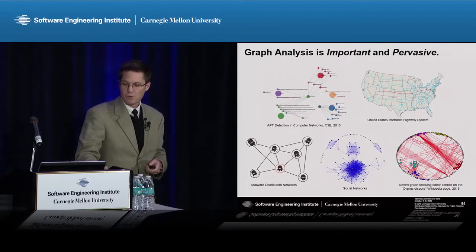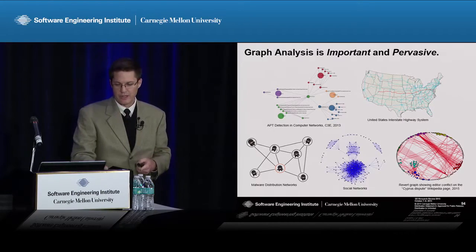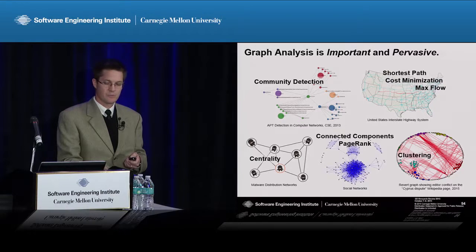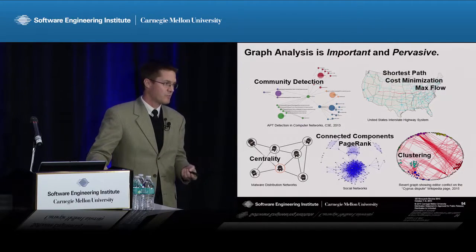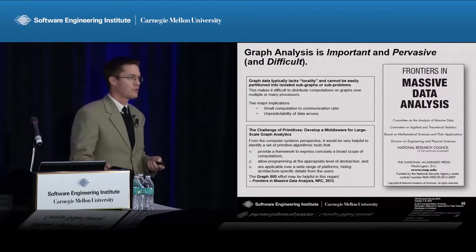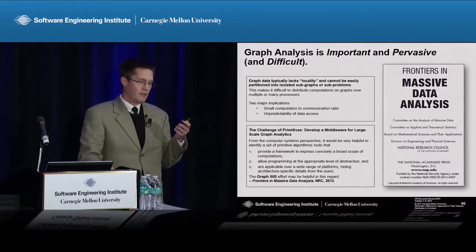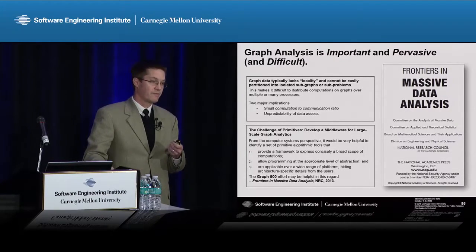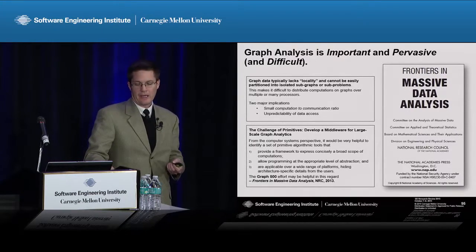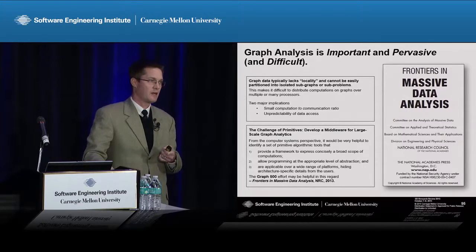Graph analytics is pervasive, especially in computer network security, social network analysis, optimization, and planning. Underlying those analytics are a trove of graph algorithms, from community detection to clustering, shortest path discovery, and centrality measures to find important nodes in a network. In 2013, the NRC released a report called Massive Data Analysis stating that graph algorithms and creating efficient ones are very difficult but very important — they have a small computation-to-communication ratio and essentially unpredictable memory access, so you can't use cache hierarchies to hide memory latency.